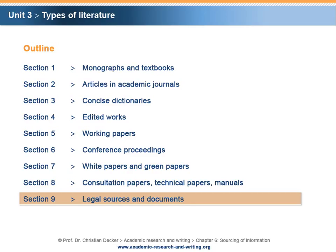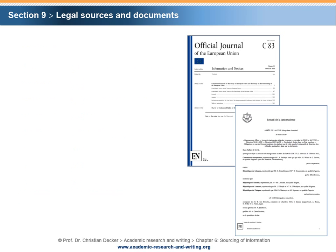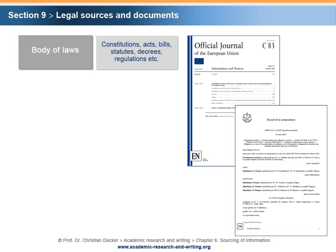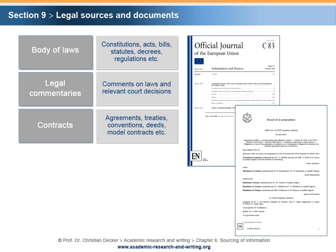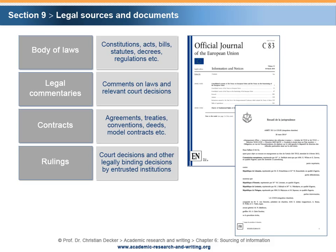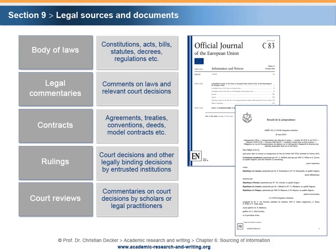Section 9: Legal Sources and Documents. Legal sources and legal documents are types of literature not only applied in legal research but likewise in other fields of academic research. Examples include: bodies of laws in the form of constitutions, acts, bills, statutes, decrees, and regulations; legal commentaries in the form of comments on laws and relevant court decisions; contracts in the form of agreements, treaties, conventions, deeds and model contracts; court decisions in the form of judicial rulings and other legally binding decisions made by entrusted institutions such as chambers of commerce; and court reviews such as commentaries on court decisions written by scholars or legal practitioners.